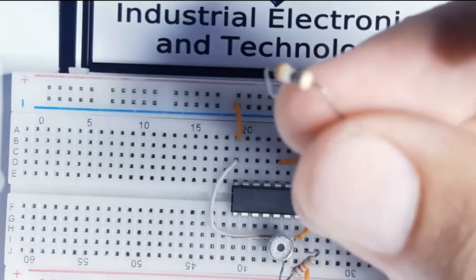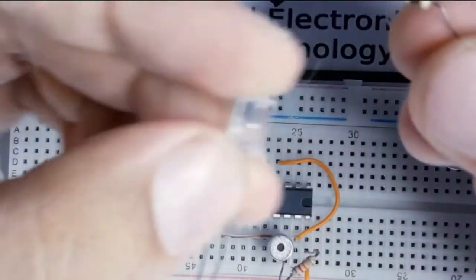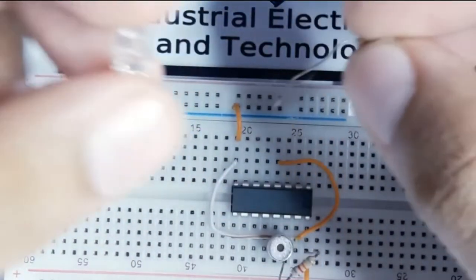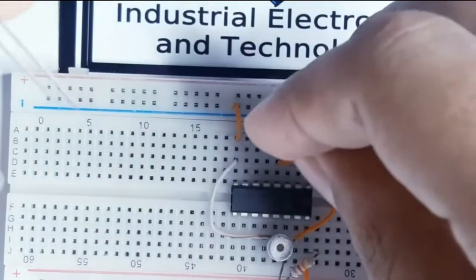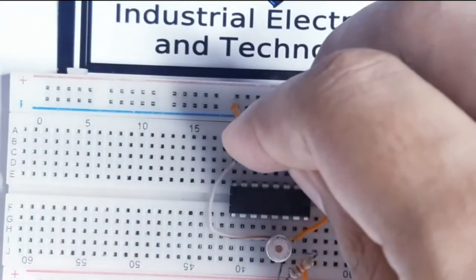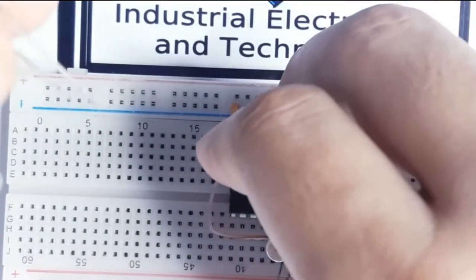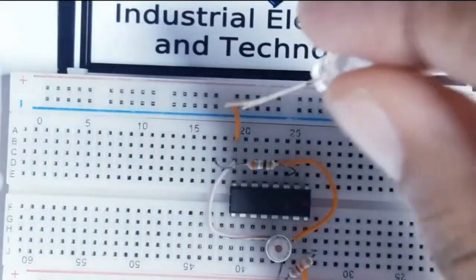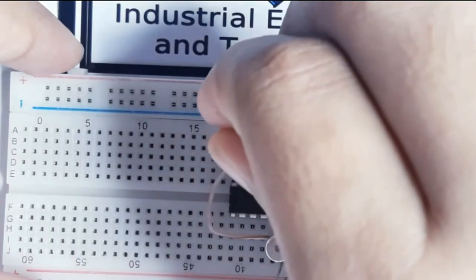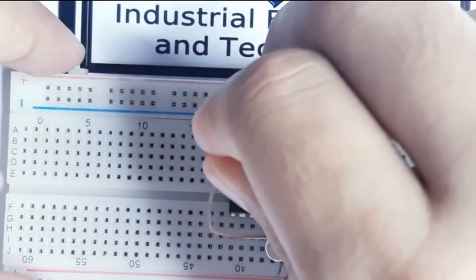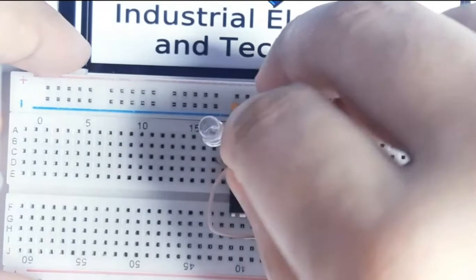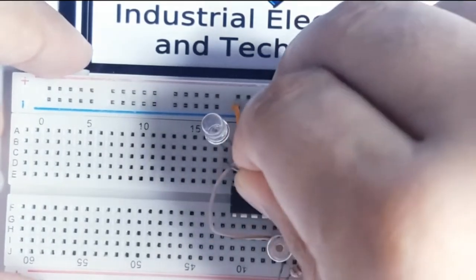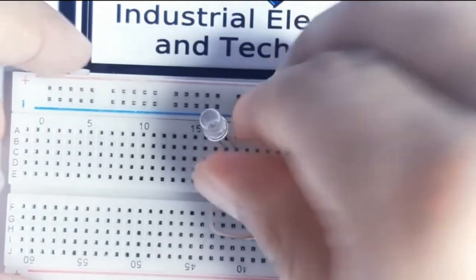390 ohm resistor along with the LED will go from pin number 3 to pin number 8. To pin number 3 I am attaching the resistor. The positive side of the LED will go towards the resistor and the negative side will go towards ground. Like this.